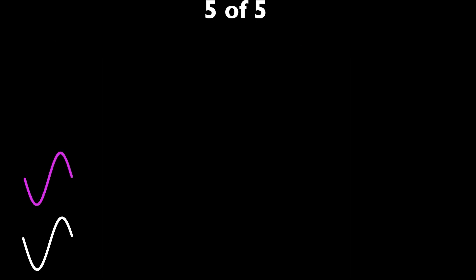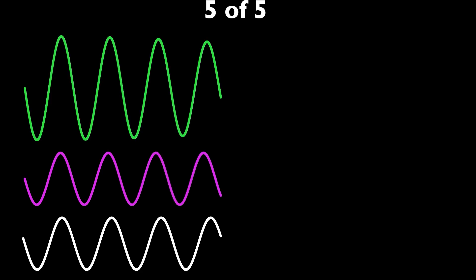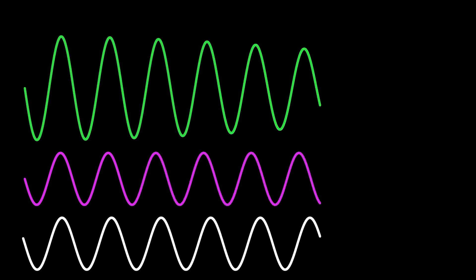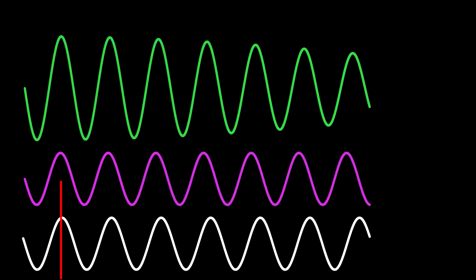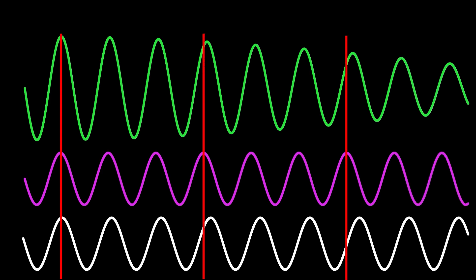The purple wave now has a frequency which is roughly 10% higher than the white wave. This means that it takes much longer for the two waves to go out of phase, and consequently our green resultant, although its amplitude does die down, it takes much longer to do it.